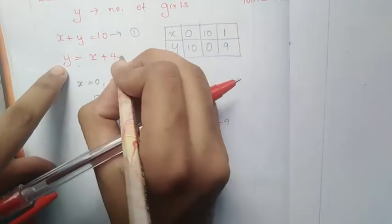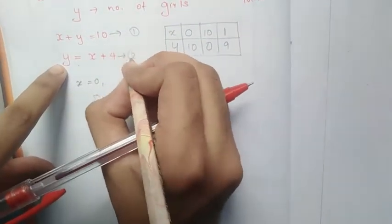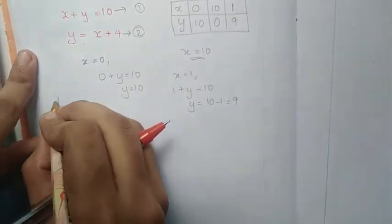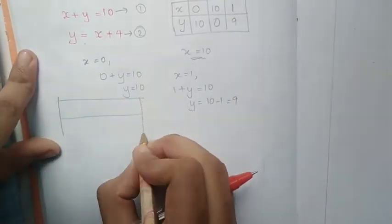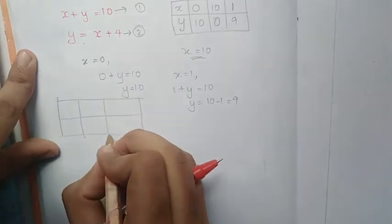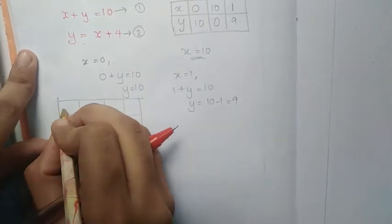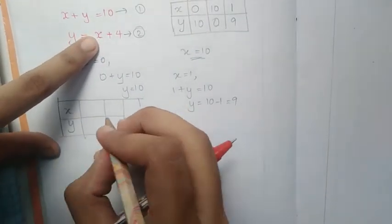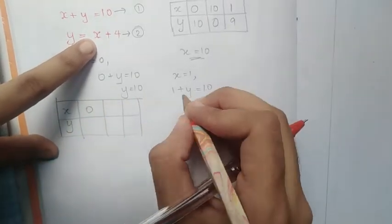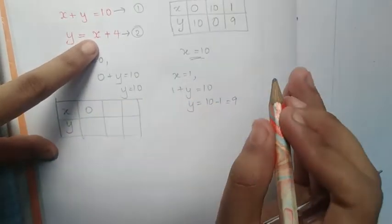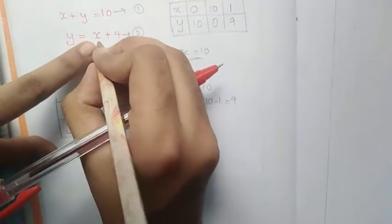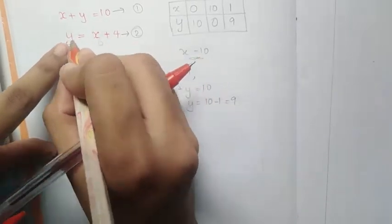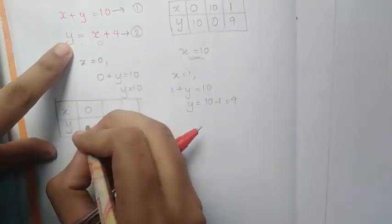Let's take the two equations. For x equals 0, we substitute into y equals x plus 4: y equals 0 plus 4, so y equals 4. We now build a table of values.